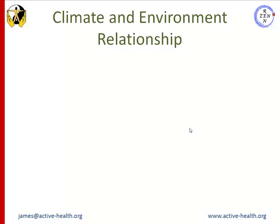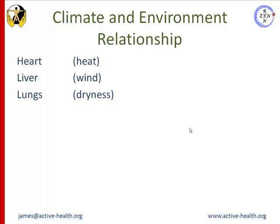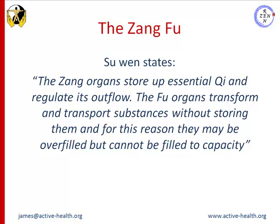The Zang Fu's relationship with the climate and environment: different climatic factors affect different Zang Fu functions. Excessive weather conditions for prolonged periods of time can adversely affect internal organ processes. The heart is affected by heat, the liver by wind, the lungs by dryness, the spleen by dampness, and the kidneys by cold. The Suwen of the Huangdi Neijing states that the Zang organs store up essential qi and regulate its outflow, while the Fu organs transform and transport substances without storing them — and for this reason they may be overfilled but cannot be filled to capacity.